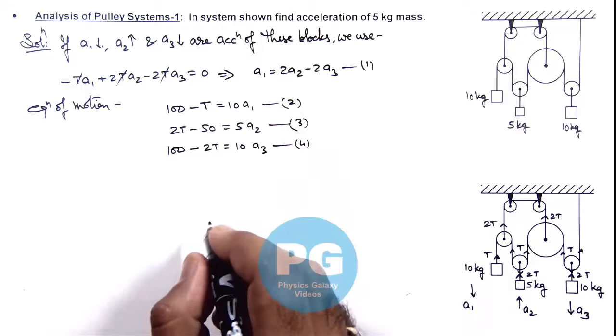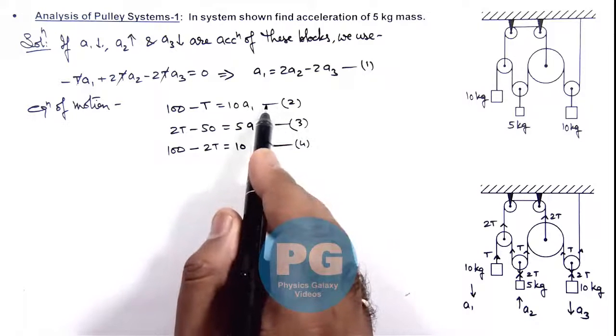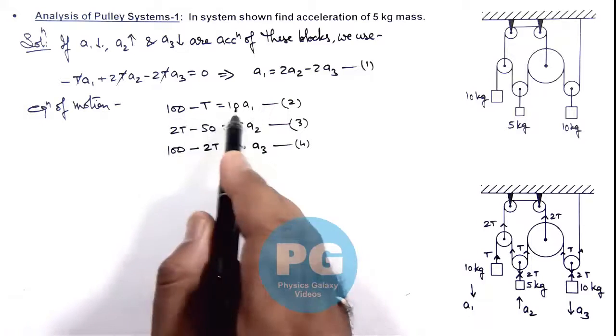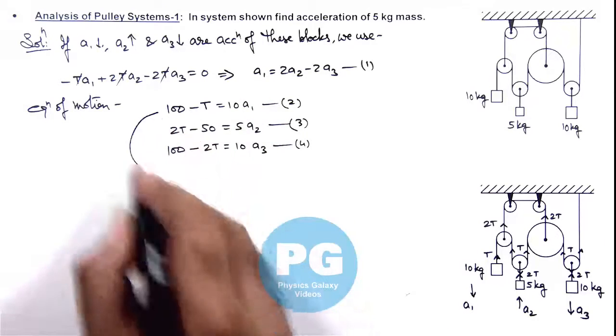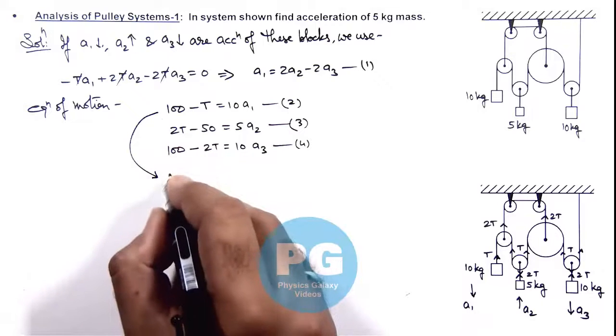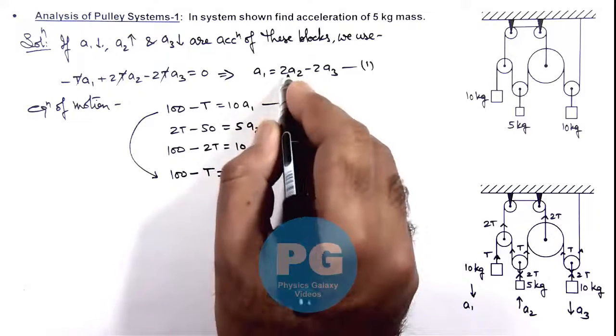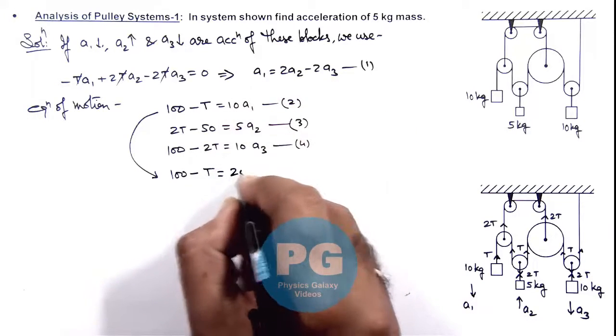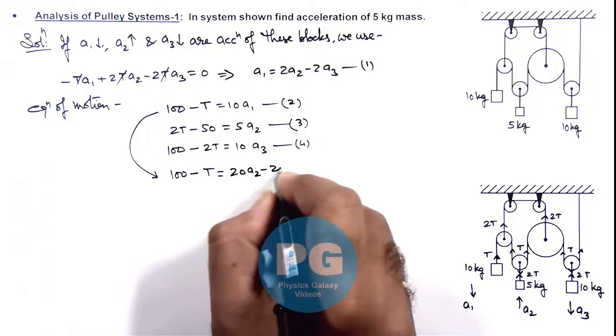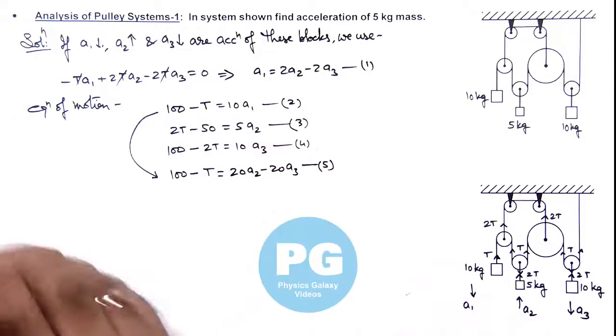From equation 2, we have 100 minus T equals 10a_y1. If we substitute the value of a_y1 from equation 1, we get 100 minus T equals 10 times (2a_y2 minus 2a_y3), which becomes 100 minus T equals 20a_y2 minus 20a_y3. This is our fifth equation, modified from equation 2.